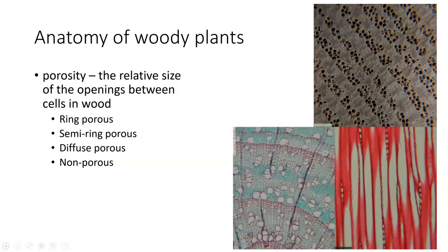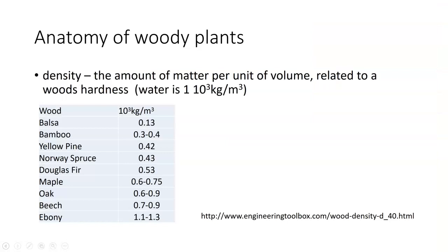Porosity is going to impart different abilities of the wood to do different things. All of these things go back to the anatomy of woody plants. Another thing we look at is density. Density is the amount of matter per unit volume, related to wood hardness. Water has a density of 1×10³ kilograms per cubic meter, so if a wood is as dense as water it will have a density of one ton per cubic meter.